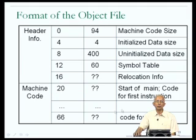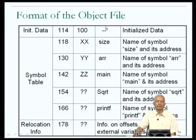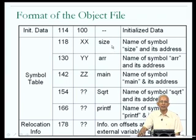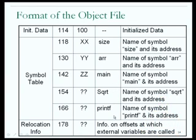This is followed by the machine code — the machine instructions corresponding to the program — followed by the data, followed by the symbol table. The symbol table seems to contain information about the various symbols or identifiers that you had used in your program. If you recall the program we talked about, there was a variable called size, an array called arr, a function called main, a function called sqrt, and a function called printf. All of these are the symbols or identifiers of the program, and the symbol table contains one entry for each.